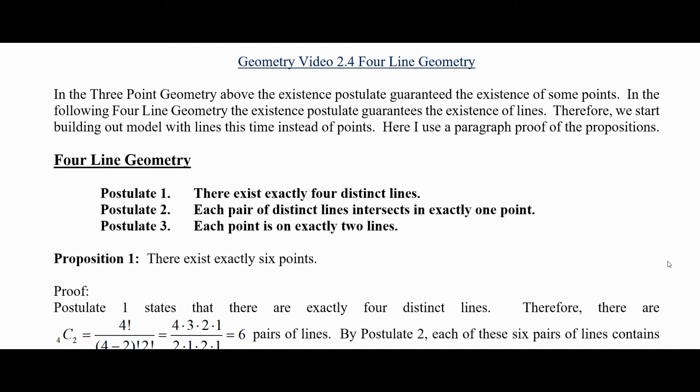So maybe we should think about these postulates two and three in if-then form. Postulate two, each pair of distinct lines intersects in exactly one point. Another way to say that is if L and M are lines, then the intersection of L and M has size one. There's exactly one point on both of them. But notice you have to have two lines to apply that. Postulate three says each point is on exactly two lines. This says if A is a point, there exists exactly two lines containing A. So here we start with the point, we get some lines. But postulate one is a flat-out existence postulate. There exists exactly four distinct lines.